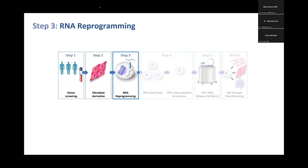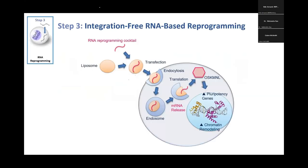ReproCell uses RNA-based reprogramming. There are two issues when considering reprogramming: freedom to operate (a licensing issue) and how much the process takes. The advantage of RNA-based reprogramming is that you don't get integration, which means tests for integration effects, off-target effects, or loss of function due to integration in a hyperactive region are not necessary. If using Sendai virus-based RNA programming, you may have to worry about persistence of the virus. The take-home message is that specific tests will be required depending on the reprogramming method used.